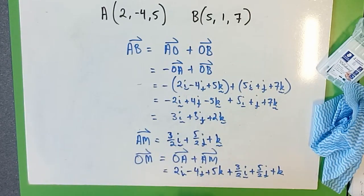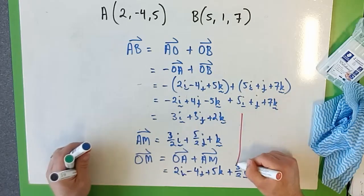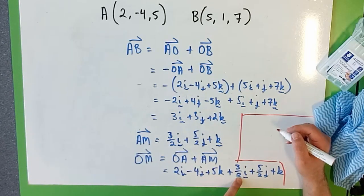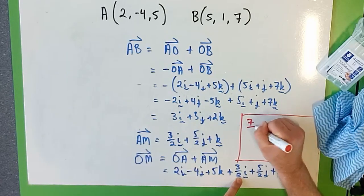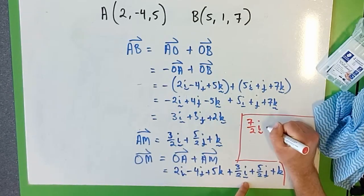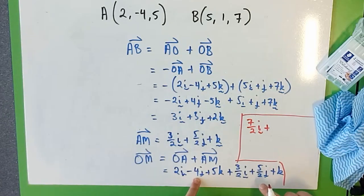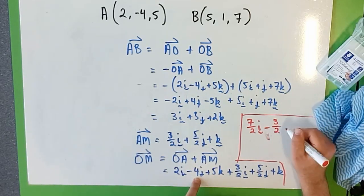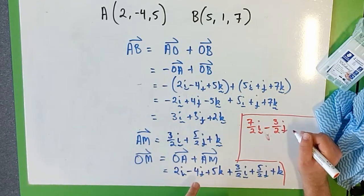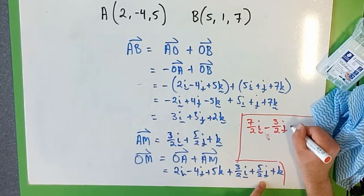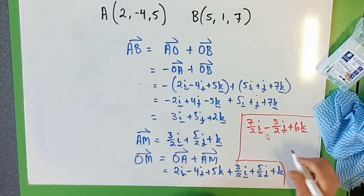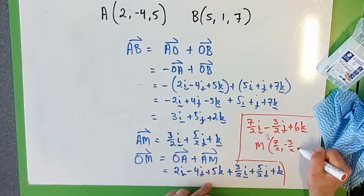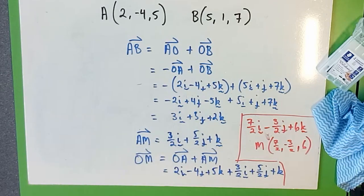So adding them all up, what do I get? I'll do it in red. 2i plus 1 and a half, that's 3 and a half, that's 7 over 2i, plus negative 4 plus 5 over 2, so that's negative 3 over 2j. Negative 4 plus 2 and a half, that's 1 and a half, so negative 3 over 2j, plus 6k. So therefore the coordinates of M are going to be 7 over 2, negative 3 over 2, and 6. Perfect, excellent.